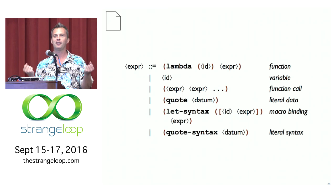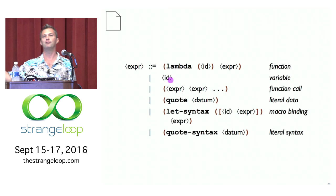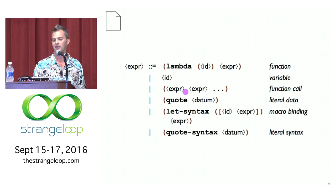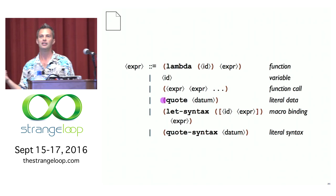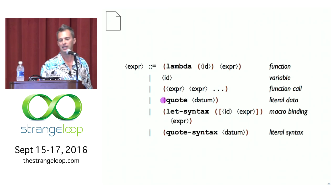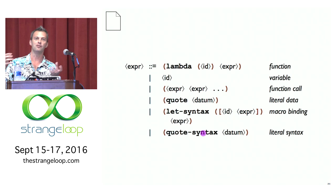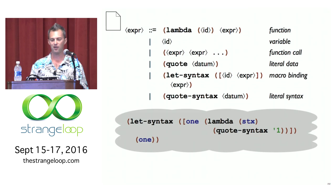We're not going to build the whole Racket language. We'll boil it down to the smallest language I know how to implement with this kind of macro system — the lambda calculus. We'll have functions of one argument, identifiers that can also refer to primitives like cons and list, function calls, quote, and the two macro parts: let-syntax to bind an identifier locally as a macro, and quote-syntax for a literal piece of code.